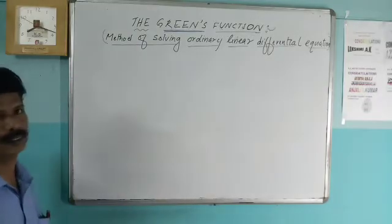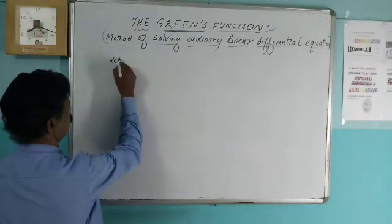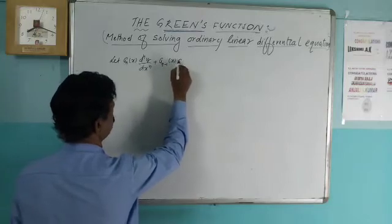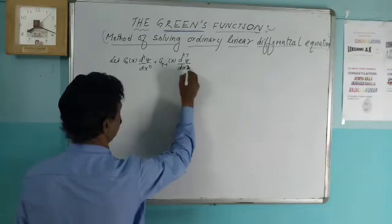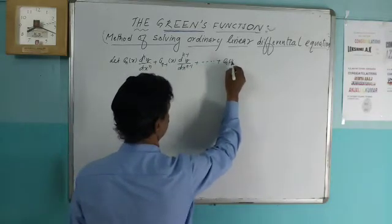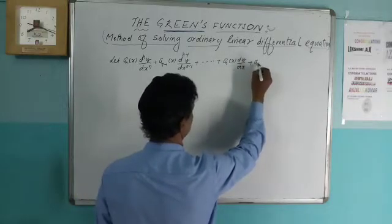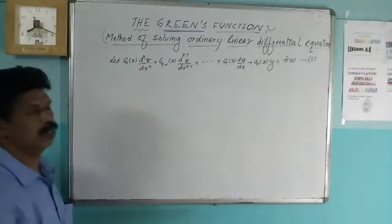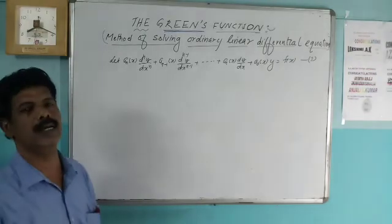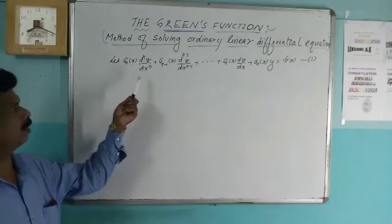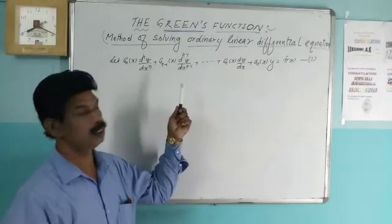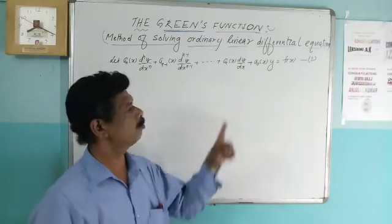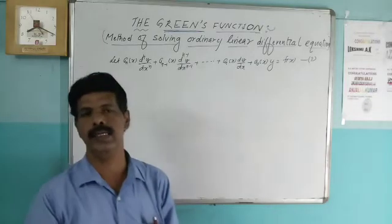First of all, we have to consider a non-homogeneous linear equation. Consider: a_n(x) d^n y/dx^n + a_{n-1}(x) d^{n-1}y/dx^{n-1} + ... + a_1(x) dy/dx + a_0(x) y = f(x). This is a non-homogeneous differential equation, equation number 1.